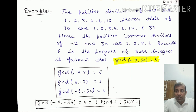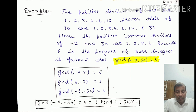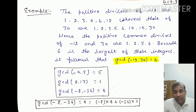Out of 1, 2, 3, and 6, the largest is 6, so GCD(minus 12, 30) equals 6. Similarly, GCD(minus 5, 5) equals 5. GCD(8, 17) equals 1, because 8 is even and 17 is prime, so their only common divisor is 1. GCD(minus 8, minus 36) equals 4, since the positive divisors of 8 are 1, 2, 4, 8, and the positive divisors of 36 are 1, 2, 4, 6, 9, 12, 18, 36, giving the largest common divisor as 4.